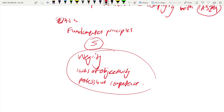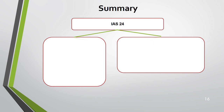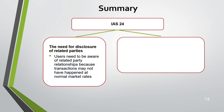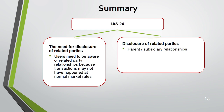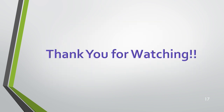Summary of IAS 24: the need for disclosure is to make users aware of related party relationships, since related party transactions often do not occur at normal market rates, making financial statements susceptible to manipulation. Key disclosures include parent-subsidiary relationships (naming the parent), transaction details and outstanding balances, and key management compensation broken down into categories such as short-term pay, pension, termination, and share-based payments.